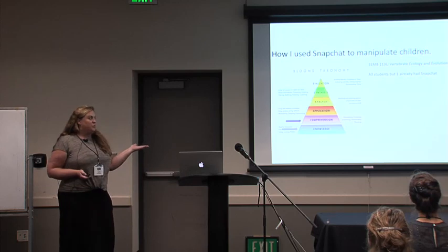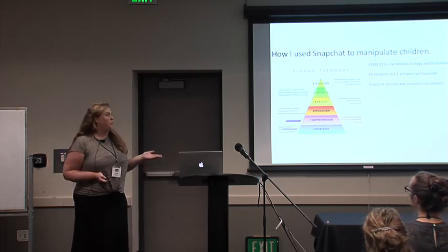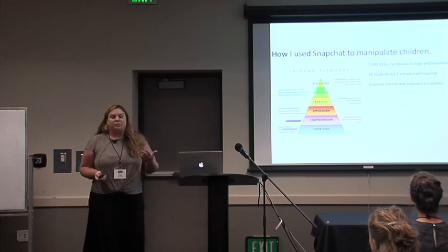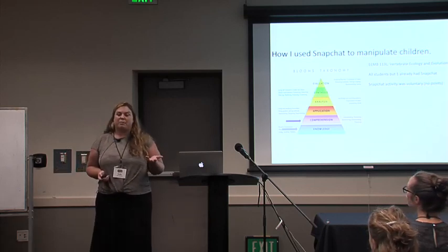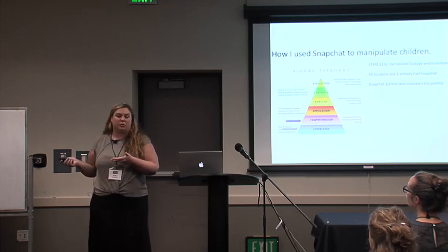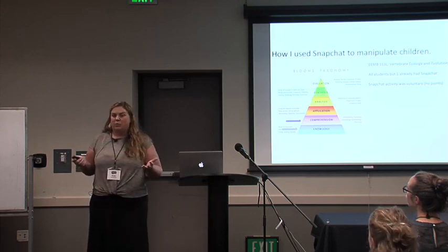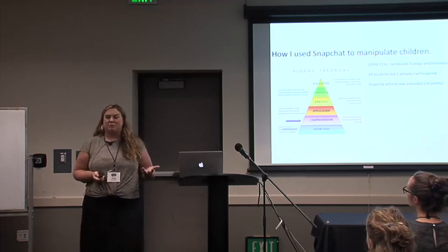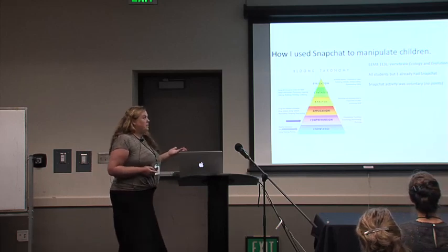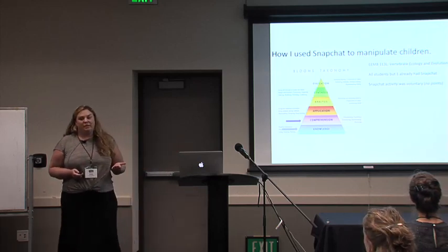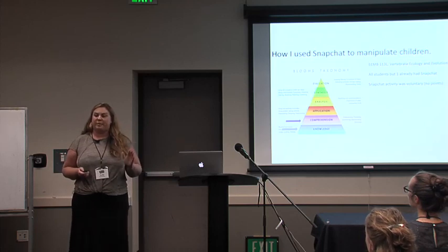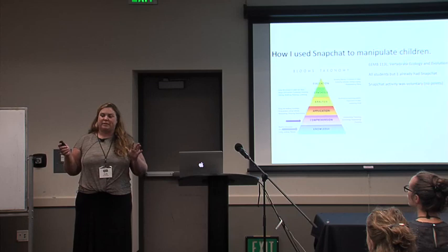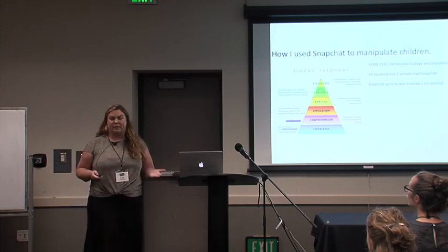All but one student already had Snapchat. This was a completely optional thing, so she didn't have to add it back in. One thing you want to think about is if it's a smartphone-based thing, is there a component that allows them to use the computer? Because we do want to be inclusive, and assuming that everyone has a smartphone might not be the best thing for an inclusive classroom. It was totally voluntary — there were no points allotted. The students simply knew that at the end of the course I'd be looking at their scores and comparing to see if there was any difference between those who used Snapchat and those who didn't.